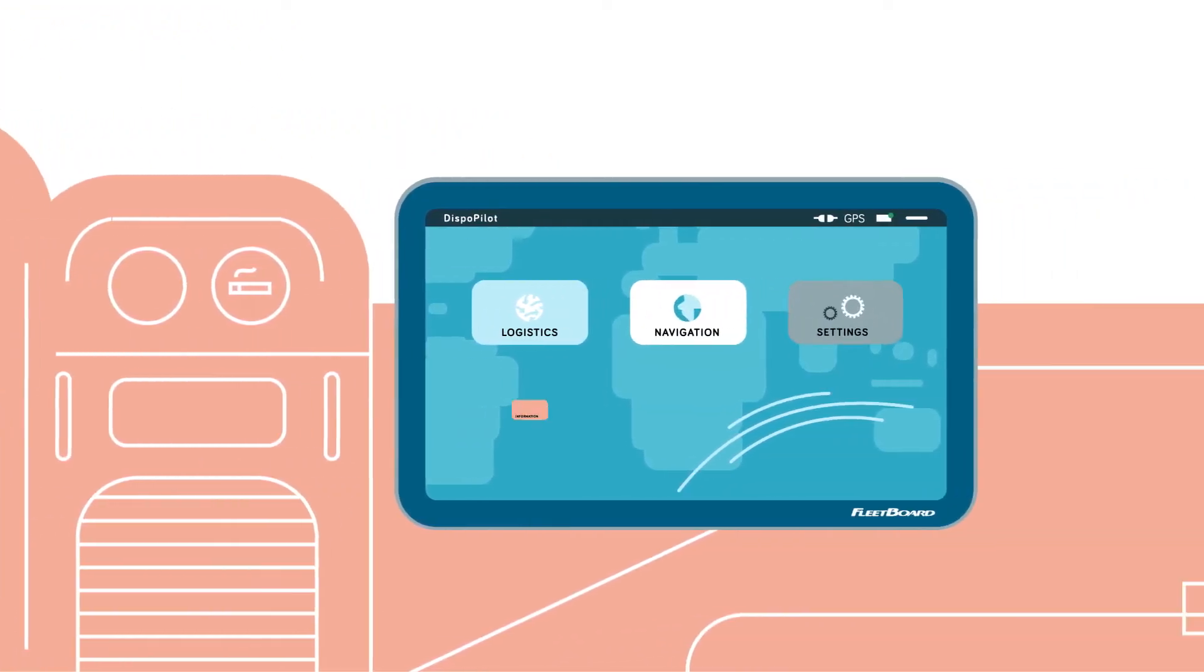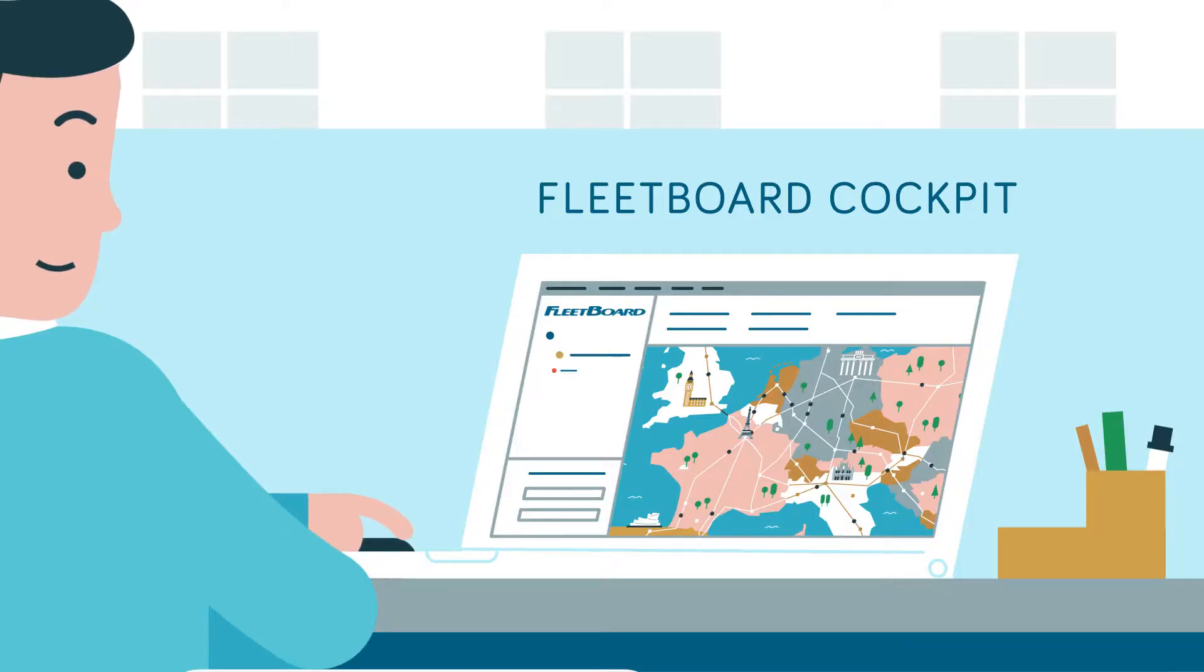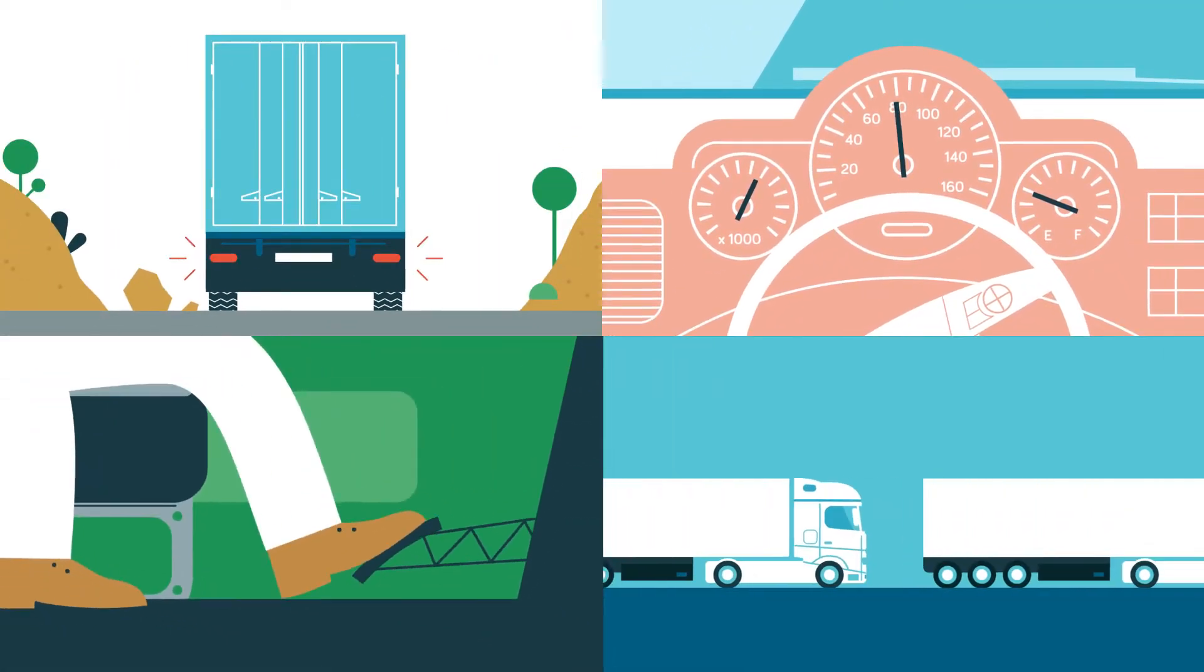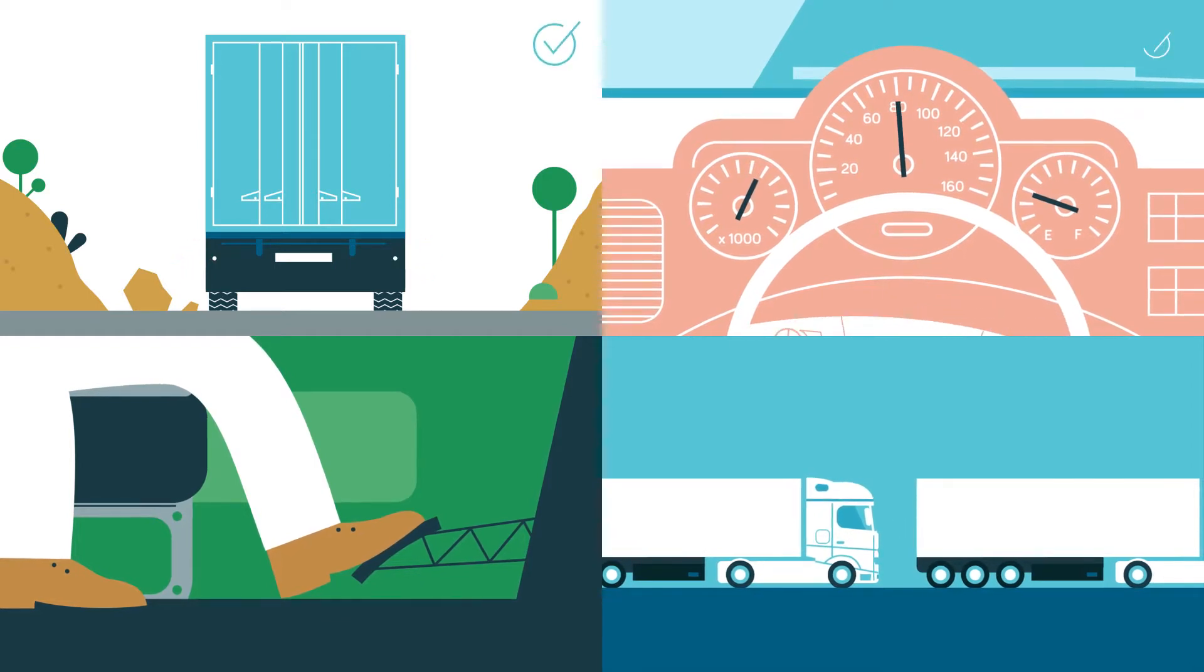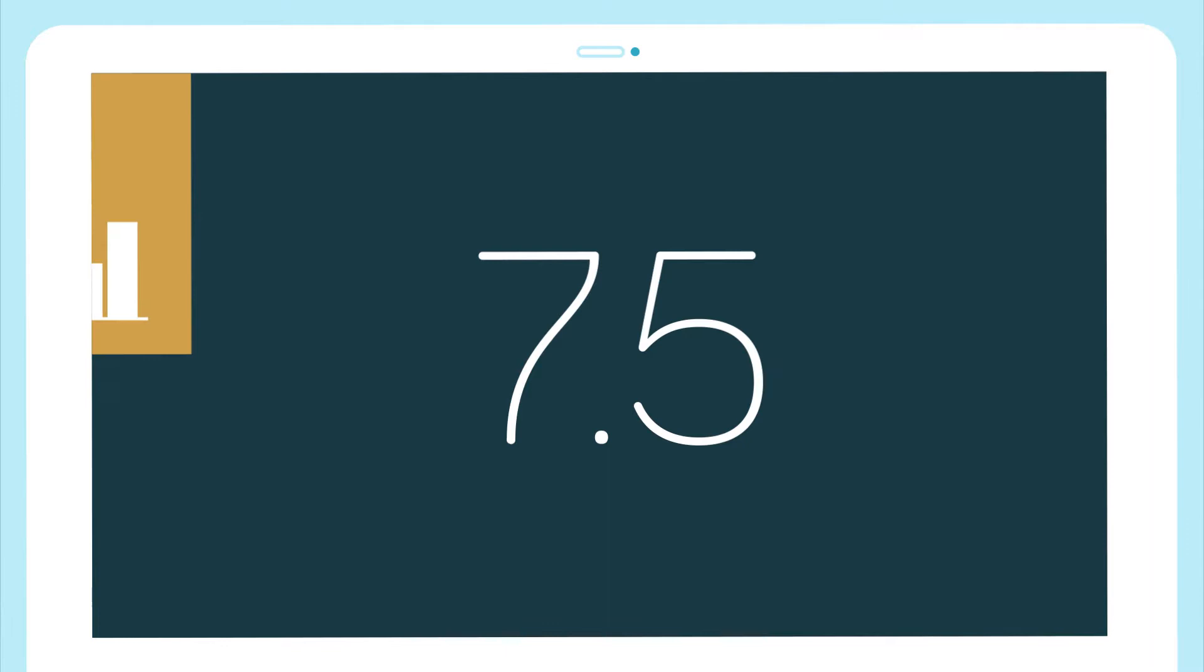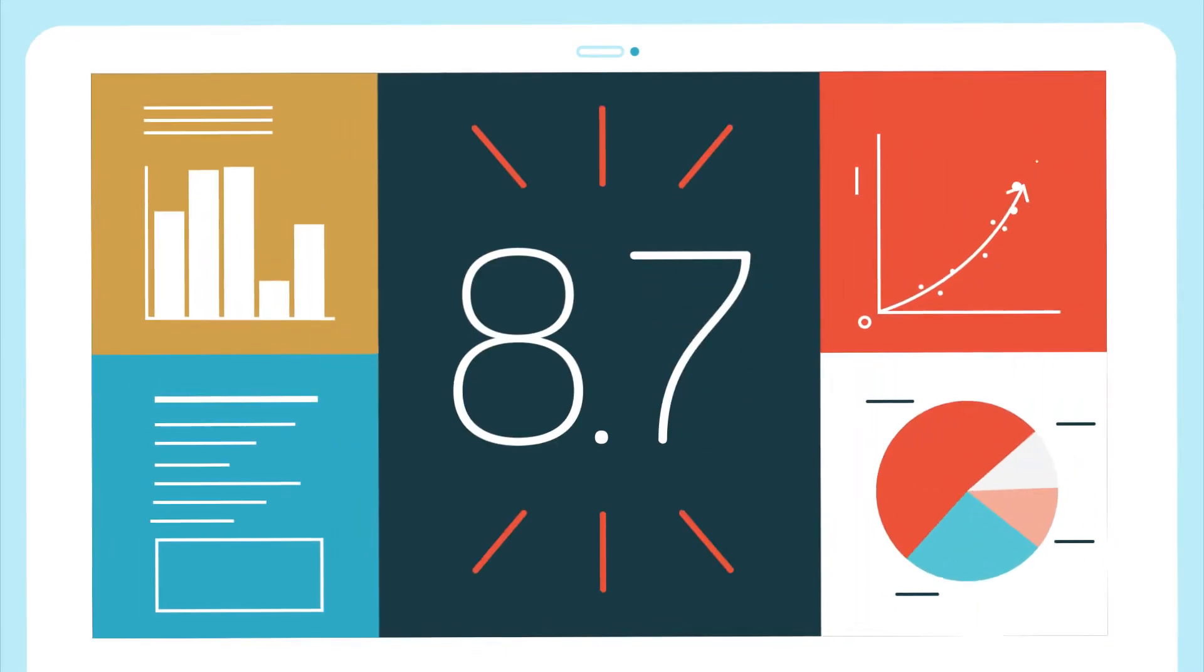The answer is Fleetboard. You can see at a glance how your driver performs in terms of braking behaviour, speed, accelerator pedal movements and anticipatory driving. In other words, everything that influences fuel consumption and wear and tear. Fleetboard translates this into a driving style score.